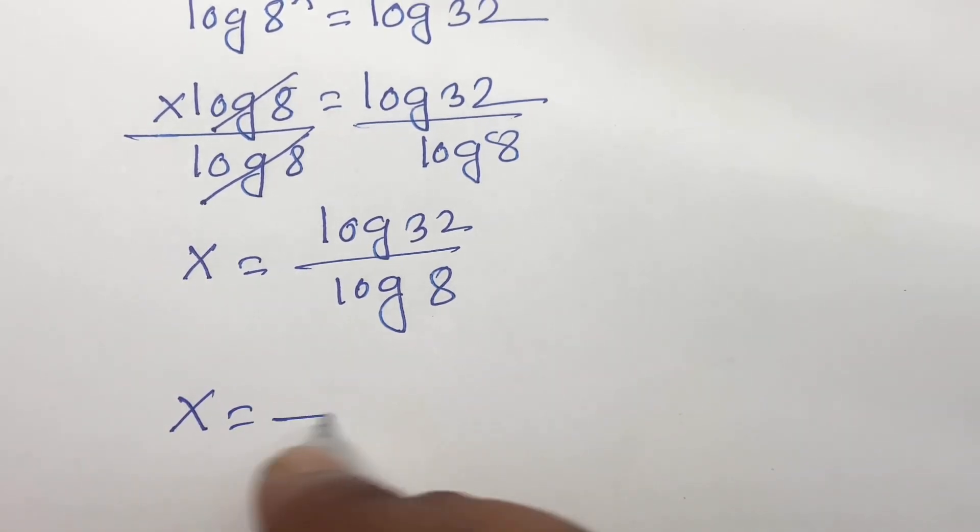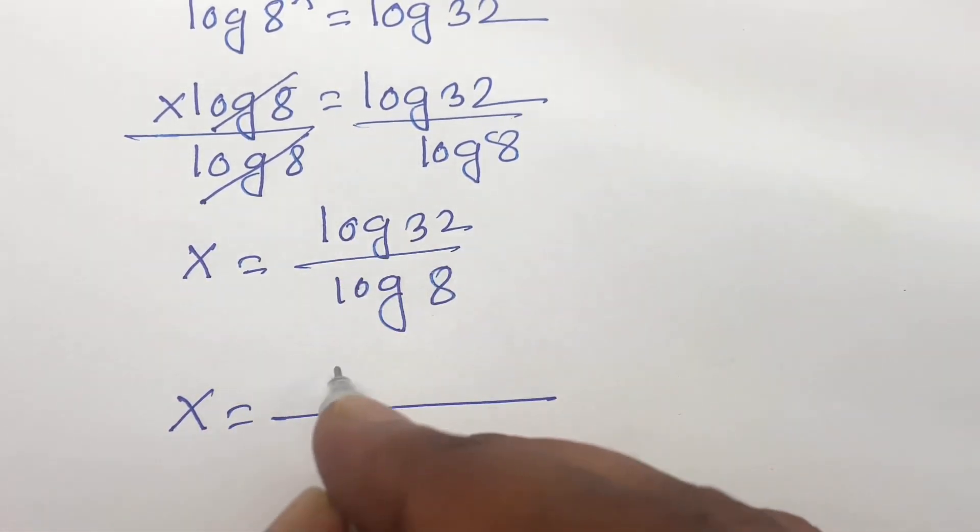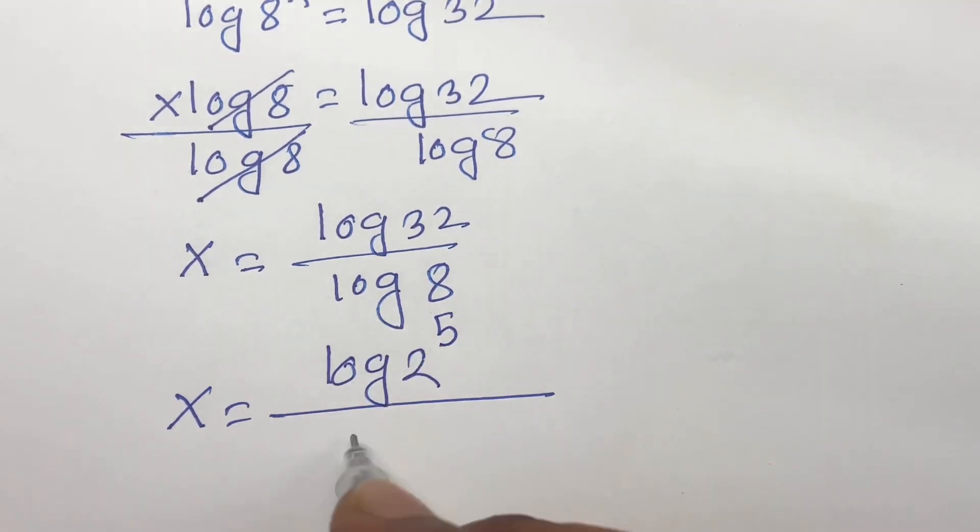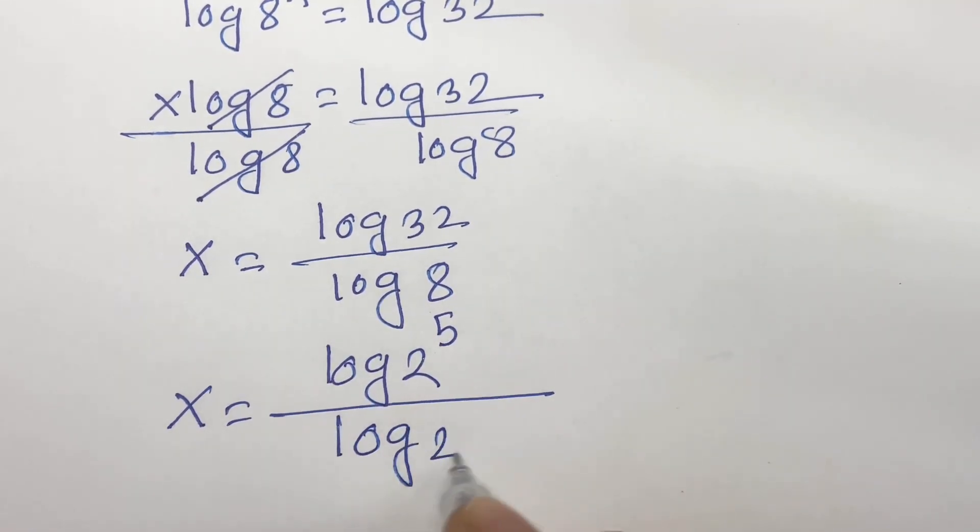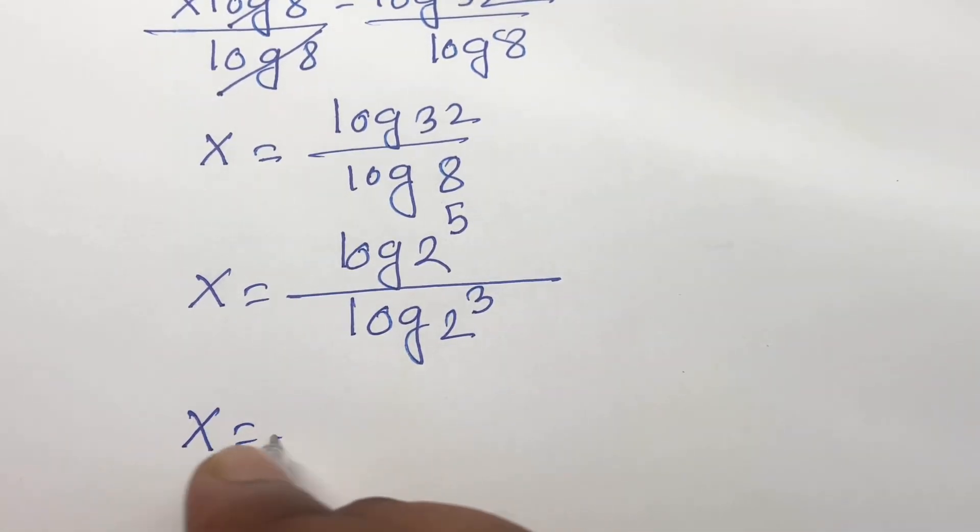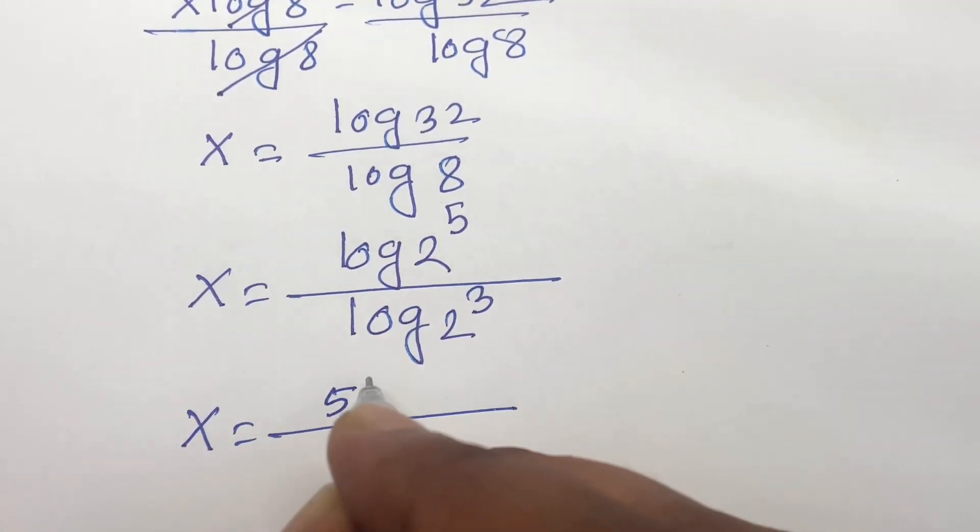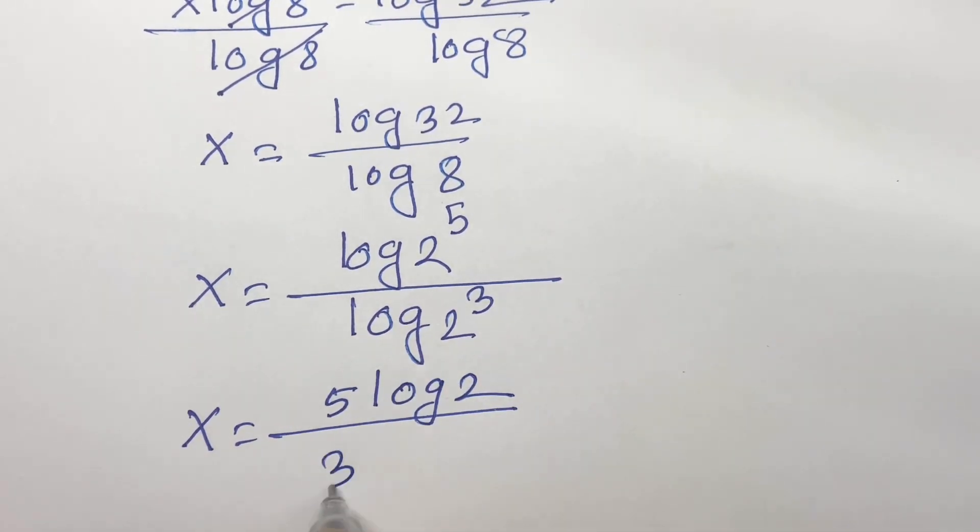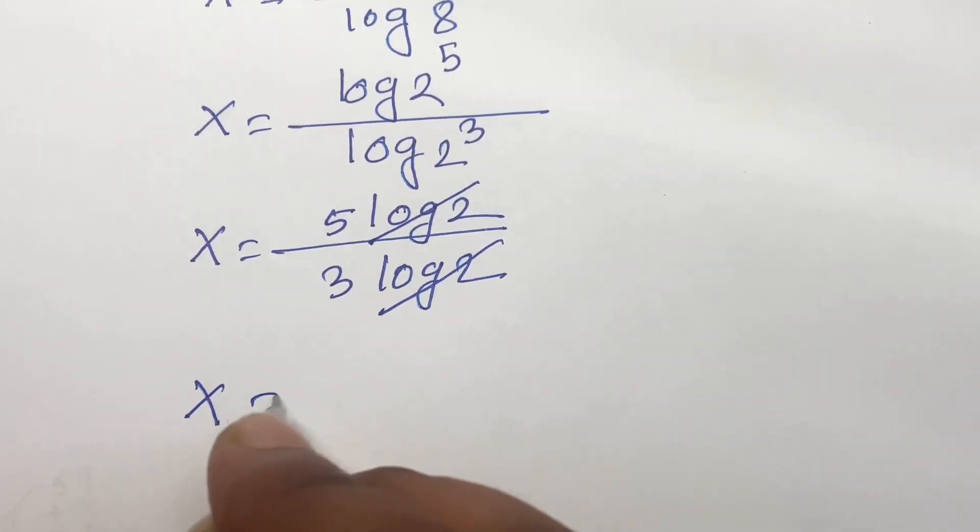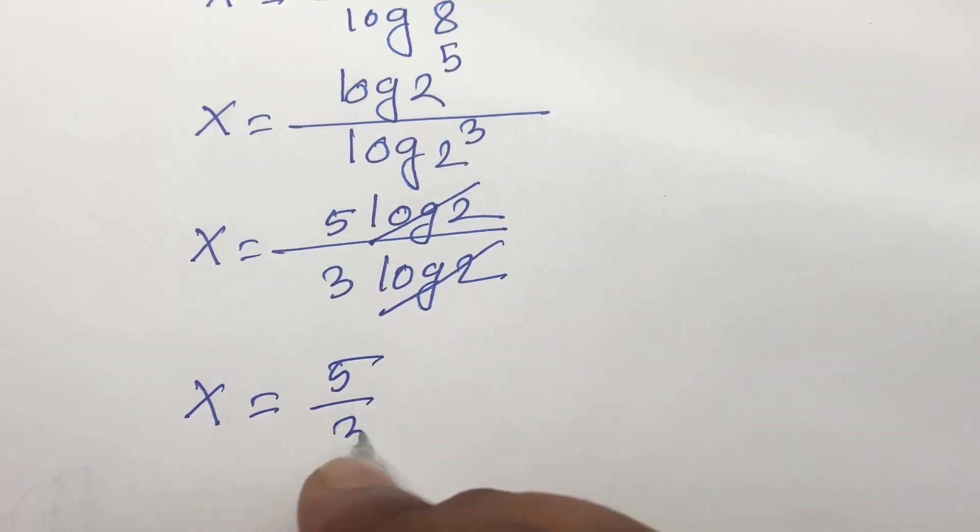Here x is equal to log 32 like as log 2 to the power 5, and log 8 like as log 2 to the power 3. Now x is equal to, this 5 moves in front, so 5 log 2 and here is 3 log 2. Log 2 and log 2 cancel, then we find out the value of x is equal to 5 over 3.